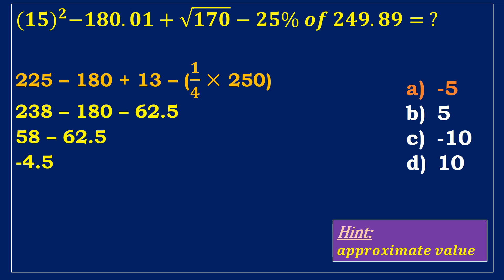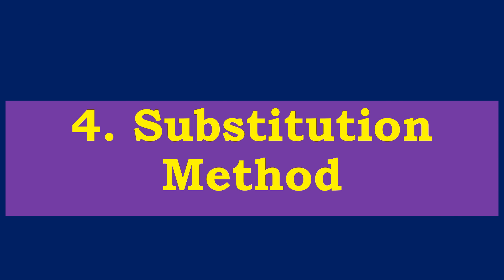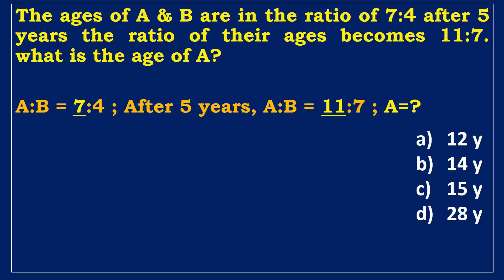Model 4. Substitution method. The ages of A and B are in the ratio of 7 to 4. After 5 years, the ratio of their ages becomes 11 to 7. What is the age of A? We may solve the problem in a smart way by employing the substitution method from given answers. From the given question, we need to find the age of A focus on the ratio value of A, which is 7. It is observed that the age of person A has to be the multiple of 7.